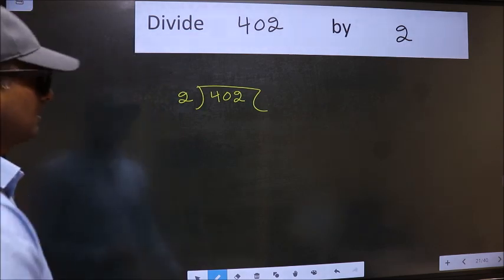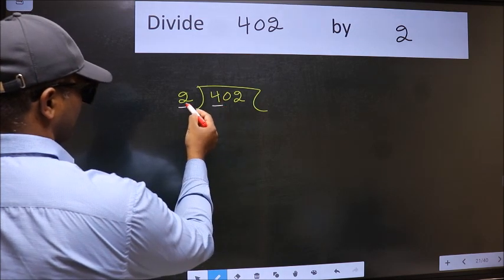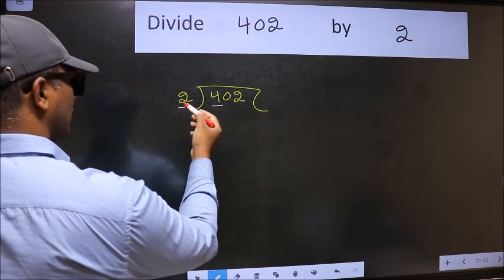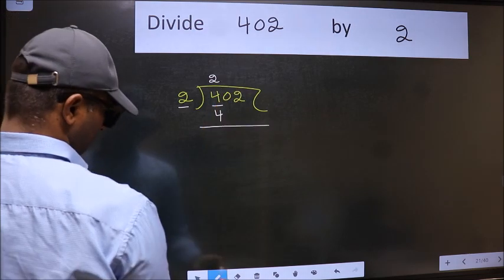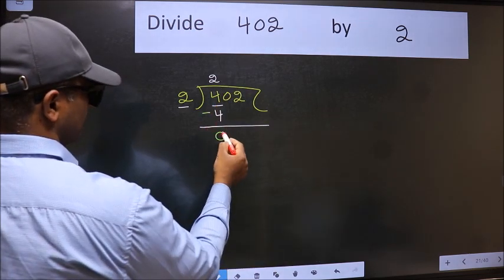Next, here we have 4 and here 2. When do we get 4 in the 2 table? 2 times 2 is 4. Now we should subtract. We get 0.